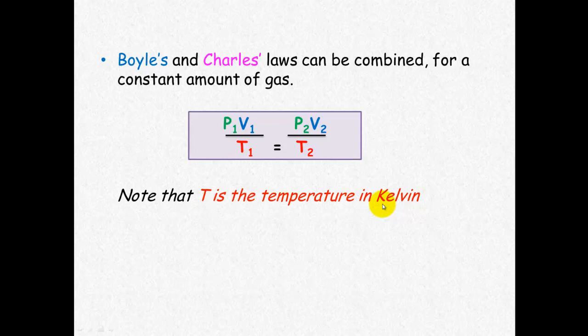For temperature, it's always Kelvin, Kelvin, Kelvin, so you must convert degrees Celsius to Kelvin. Because it's a ratio, it doesn't matter what pressure is in or what volume is in, as long as those units are the same on both sides.